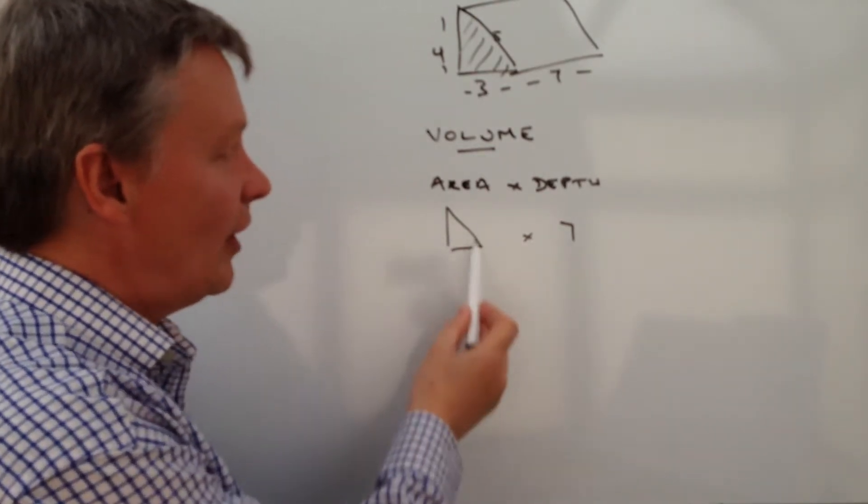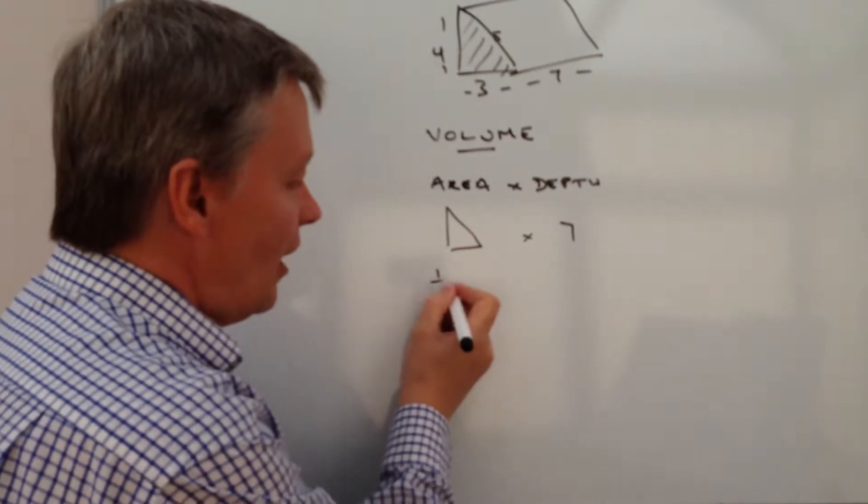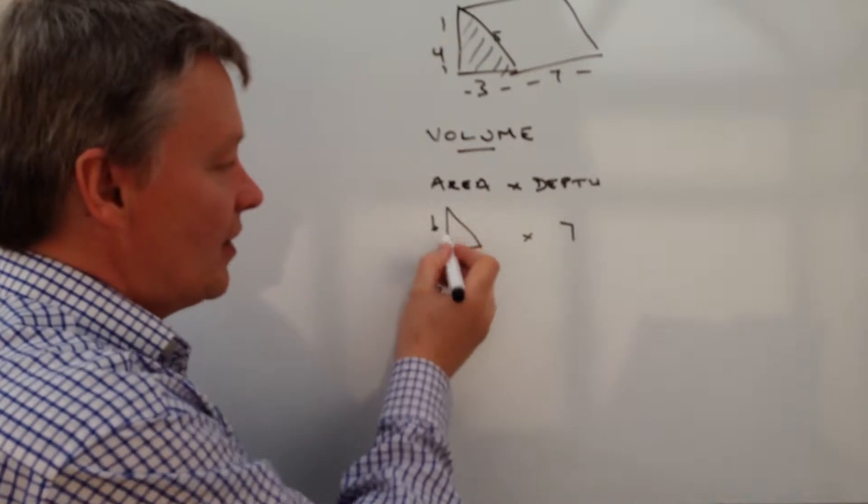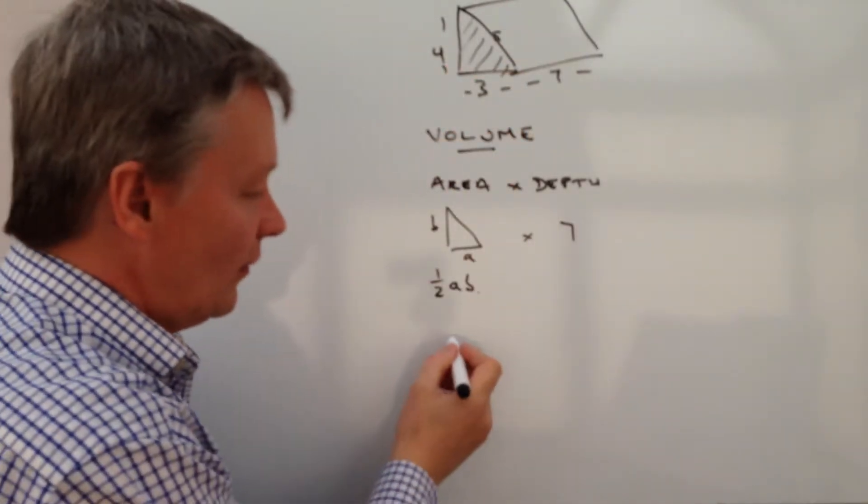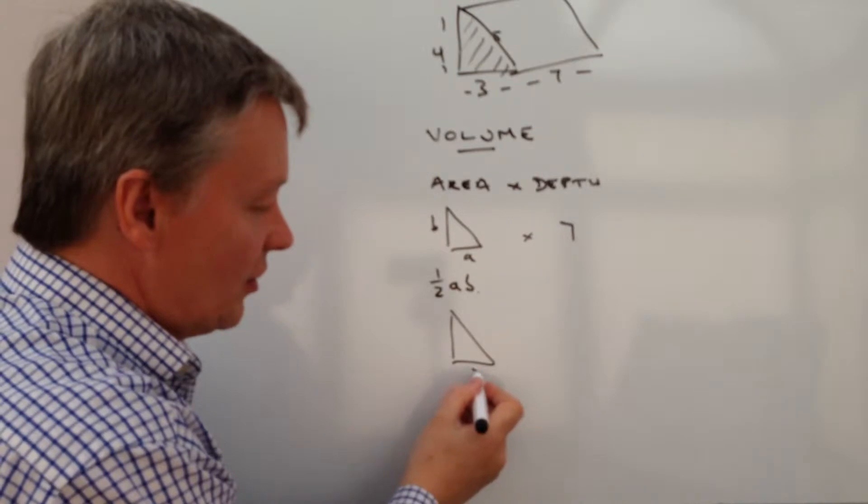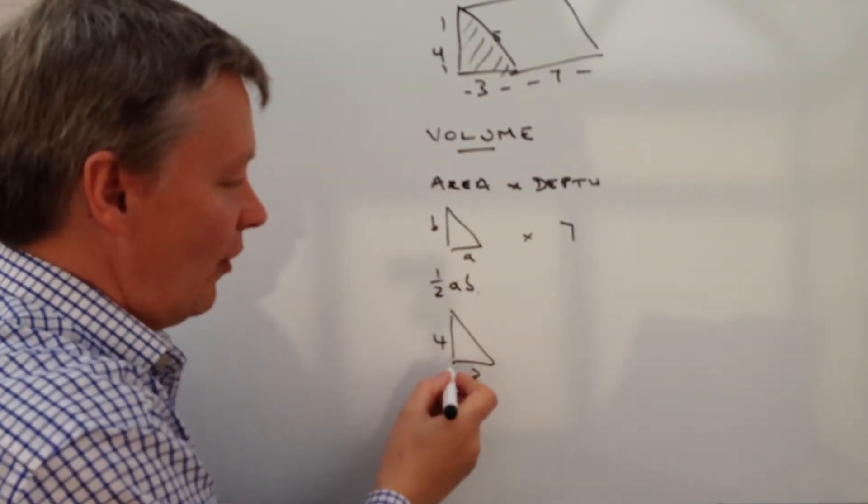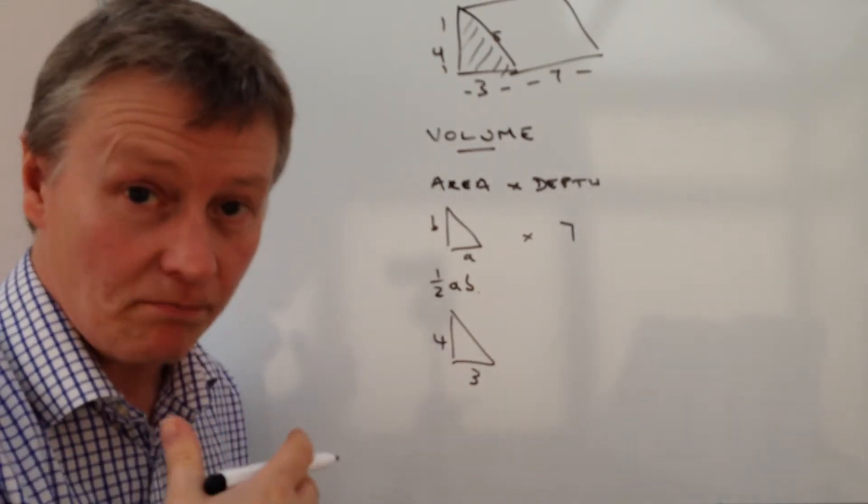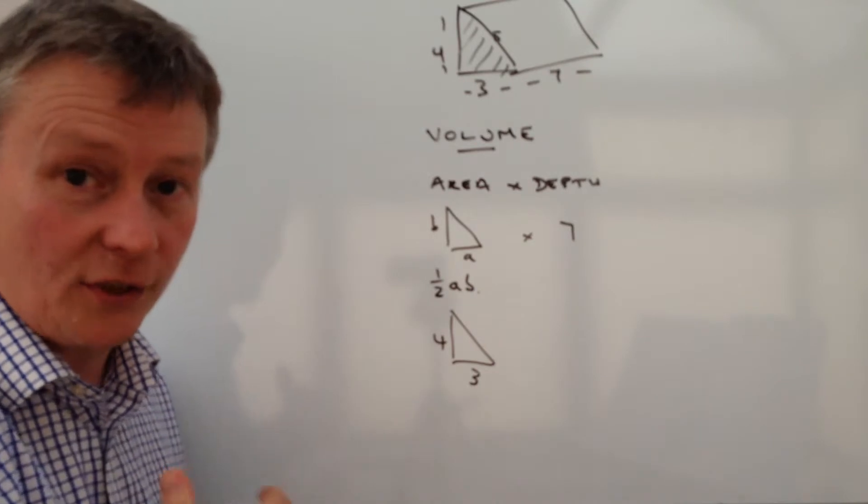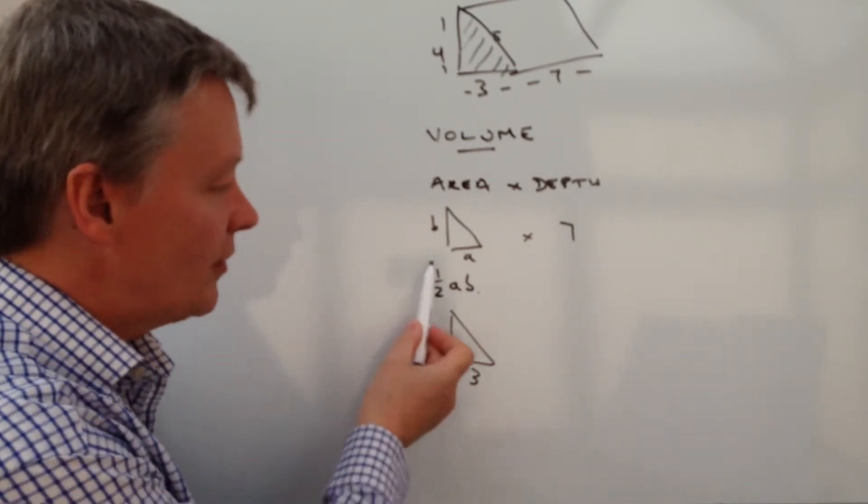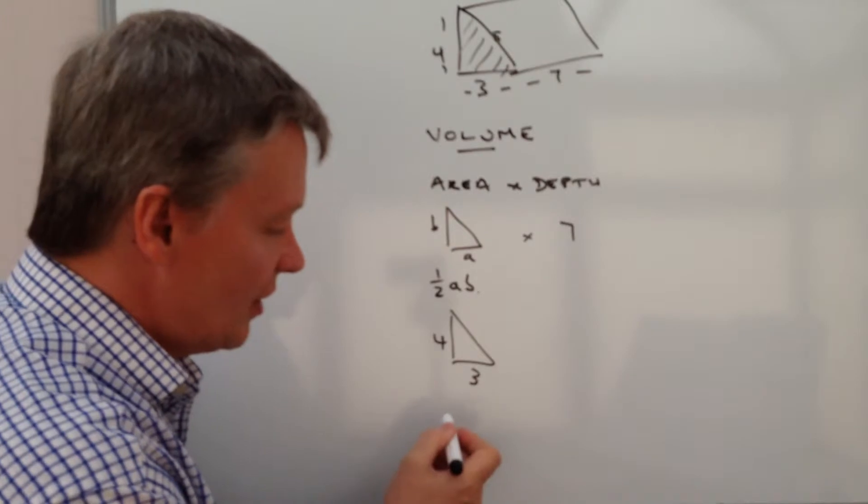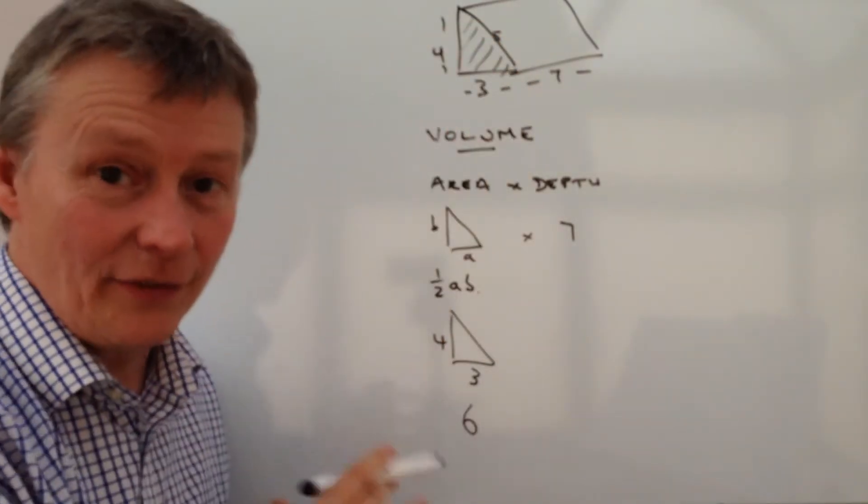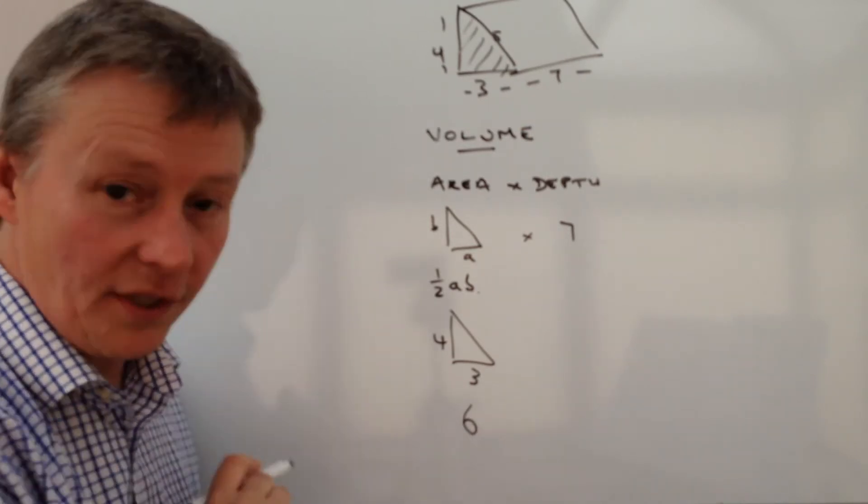So let's get the area of the triangle first. Well an area of triangle is a half a b, where this is a and this is b. So if we look at the details we've got this. So this is 3 and this is 4 and it's a half of 3 times 4 which is going to be 6. So 3 times 4 is 12 and then 12 times a half is going to be 6. So the area of this particular triangle at the end of the triangular prism is 6 cm squared.